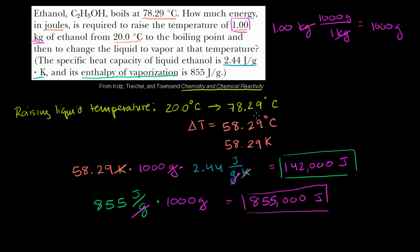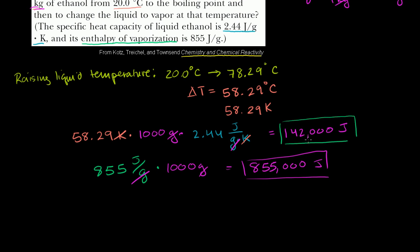Then it took it to stay at 78.29, but go from the liquid form to the vapor form. This took the bulk of the energy. But if we want to know the total amount of energy, we could actually, let's see if we can add this up in our heads. It's 855,000 plus 842,000.